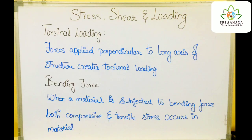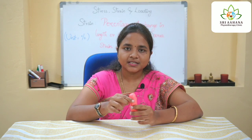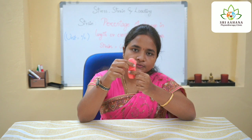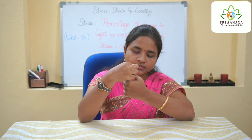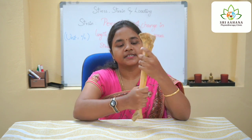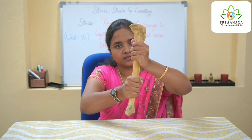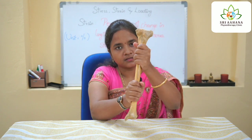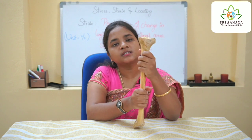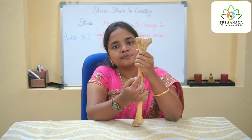The next concept would be torsional loading. In torsional loading, the force applied acts perpendicular to the long axis of the bone or the structure — it is twisted like this. Whenever the tibia is subjected to torsional loading, it undergoes a spiral fracture. The force is perpendicular to the long axis, so torsional loading produces a spiral fracture in the tibia.